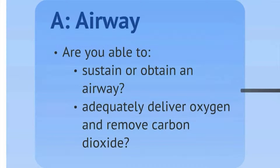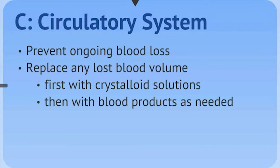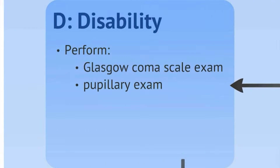A is for airway. We want to secure an airway for the trauma patient so we can adequately deliver oxygen and remove carbon dioxide. The airway may not be perfect or lasting, but is a temporary means to provide oxygenation and ventilation. The next greatest threat to life is any injury causing breathing difficulties — pneumothoraces, hemoneumothoraces, and the like — where we stabilize the lungs. We then assess the circulatory system to stem any ongoing blood loss and replace lost blood volume, first with crystalloid solutions, then with blood product if needed. We then move to a disability exam, essentially a Glasgow Coma Scale exam followed by a pupillary exam.